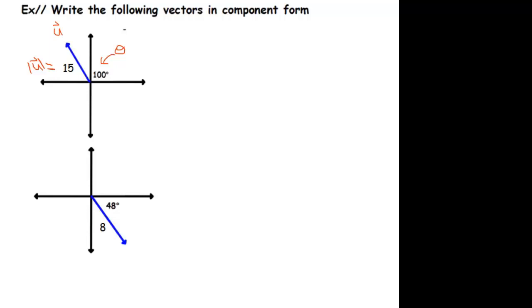Okay, so one way to do it is just to simply remember the formula we just came up with in the last video. In component form, the vector can be written as the magnitude of the vector times cosine of the angle, comma, the magnitude times the sine of the direction angle.